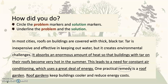Here are the answers. How did you do? The problem marker is the word challenges, and the solution marker is the word remedy. These two sentences contain the problem. This sentence introduces the solution, which is a roof garden, and then it continues to talk about the solution, which is the roof garden.